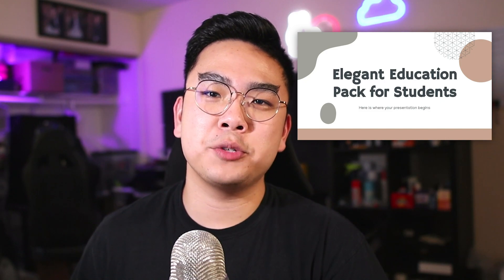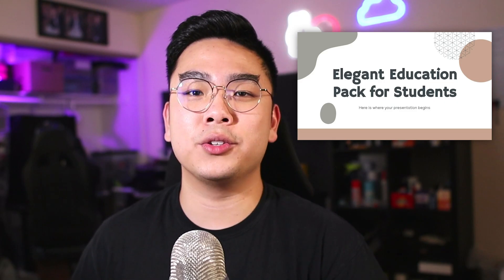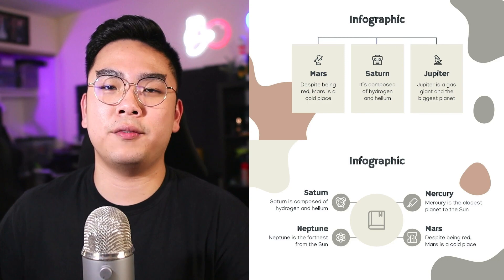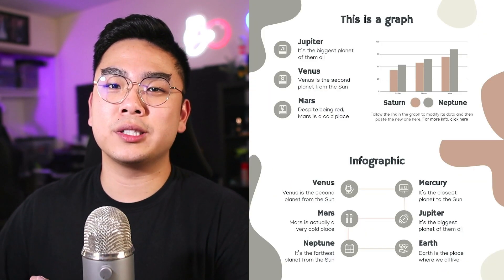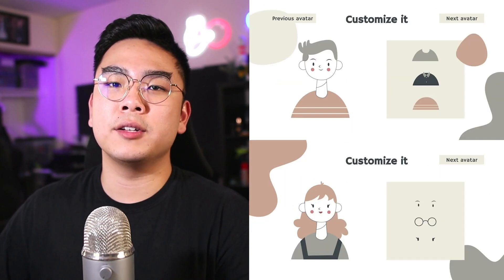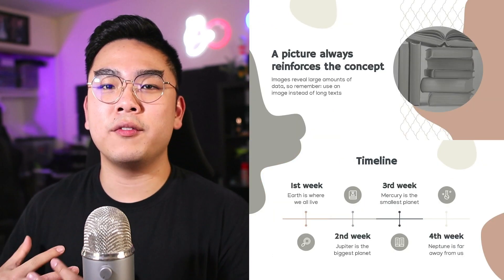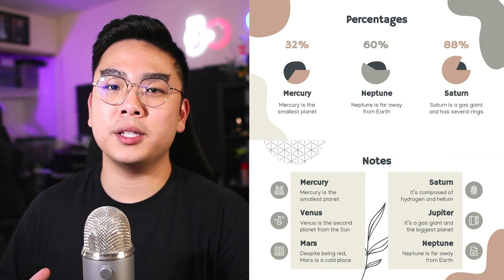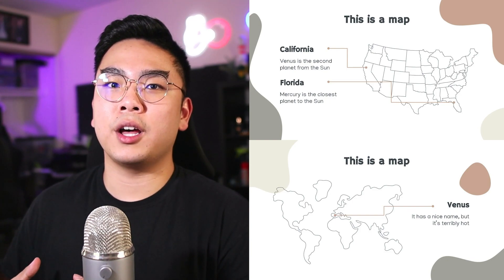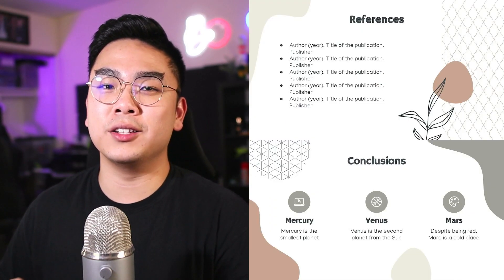The first one is called the Elegant Education Pack for Students, but you don't have to be a student to use it because it comes with a lot of really useful features. This template comes in five different colors, so you're able to swap out different colors and themes. It includes zoom backgrounds, customizable avatars, planners, and daily activity trackers. The main core is the Google Slides templates, which are very clean, minimalistic, and modern. It also has accents like leaves and geometric shapes in the background to amp up your presentation and make it not look dull.